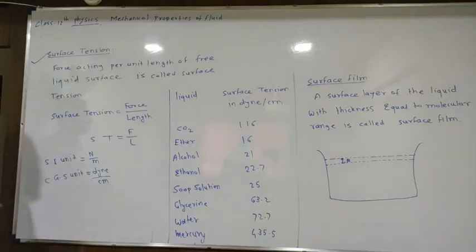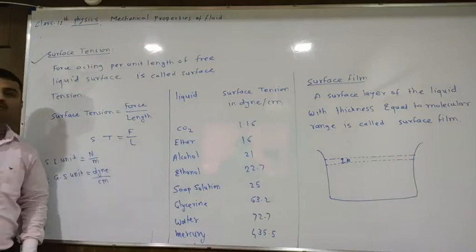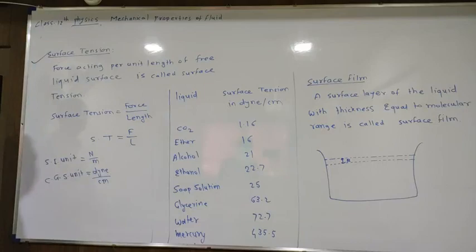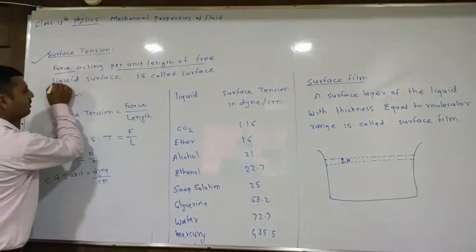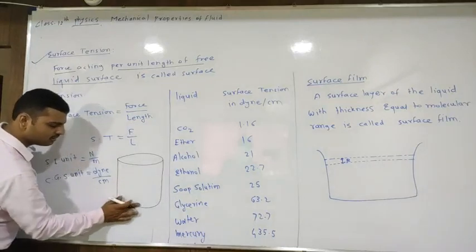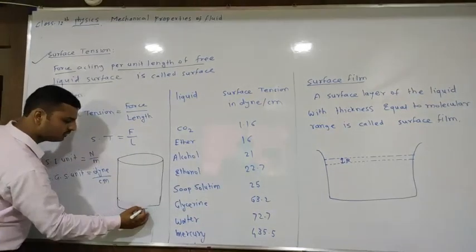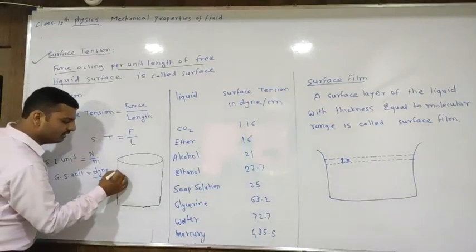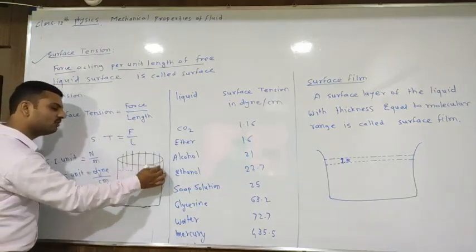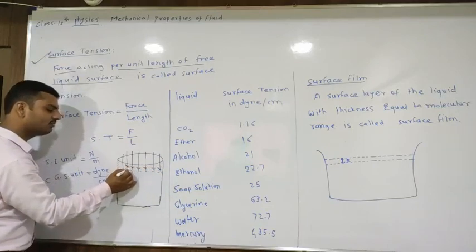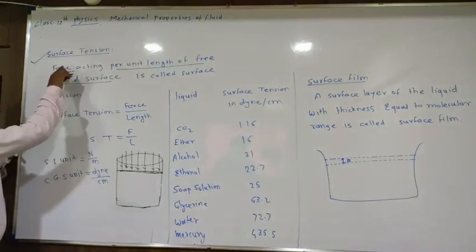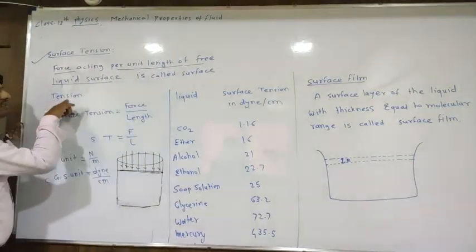The next property of fluid is surface tension. We have seen the first property which is pressure, and the second property is surface tension. The force acting per unit length of free liquid surface is called surface tension. Consider a beaker filled with water — the top is the free liquid surface, and the force acting per unit length of that surface is surface tension.